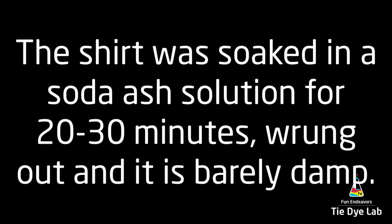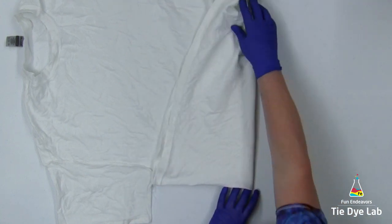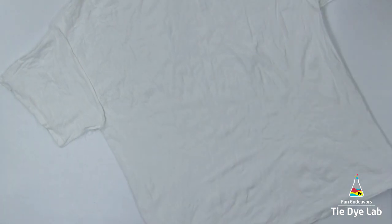As usual, the shirt was washed and dried, then soaked into soda ash solution for 20 to 30 minutes. I wrung it out of my panda spin dryer so it's just barely damp. The shirt's also turned inside out.